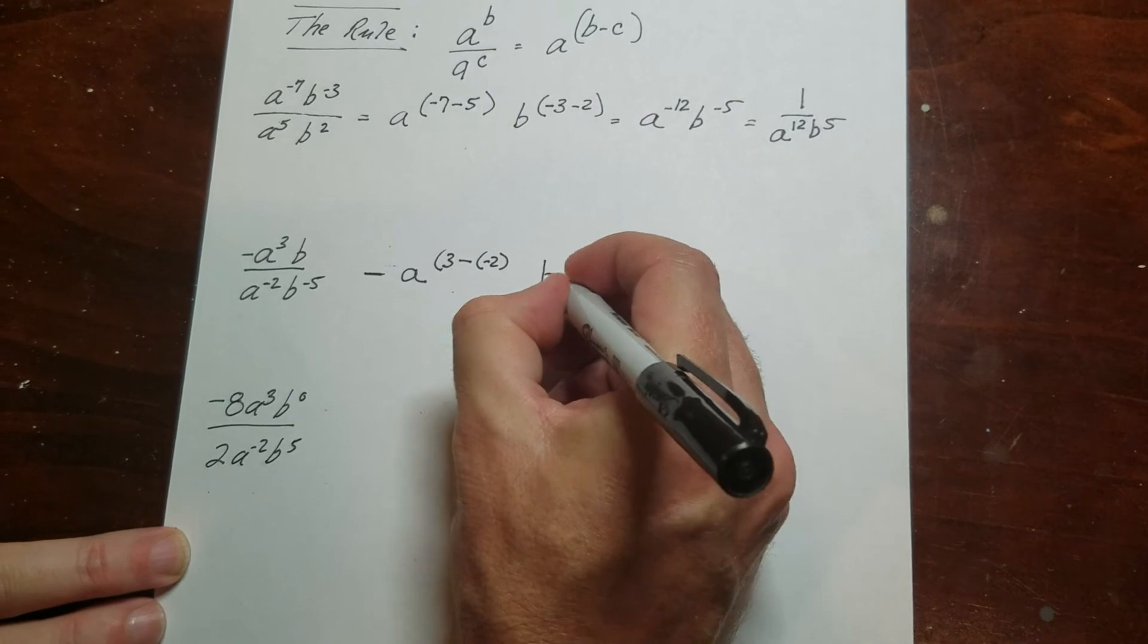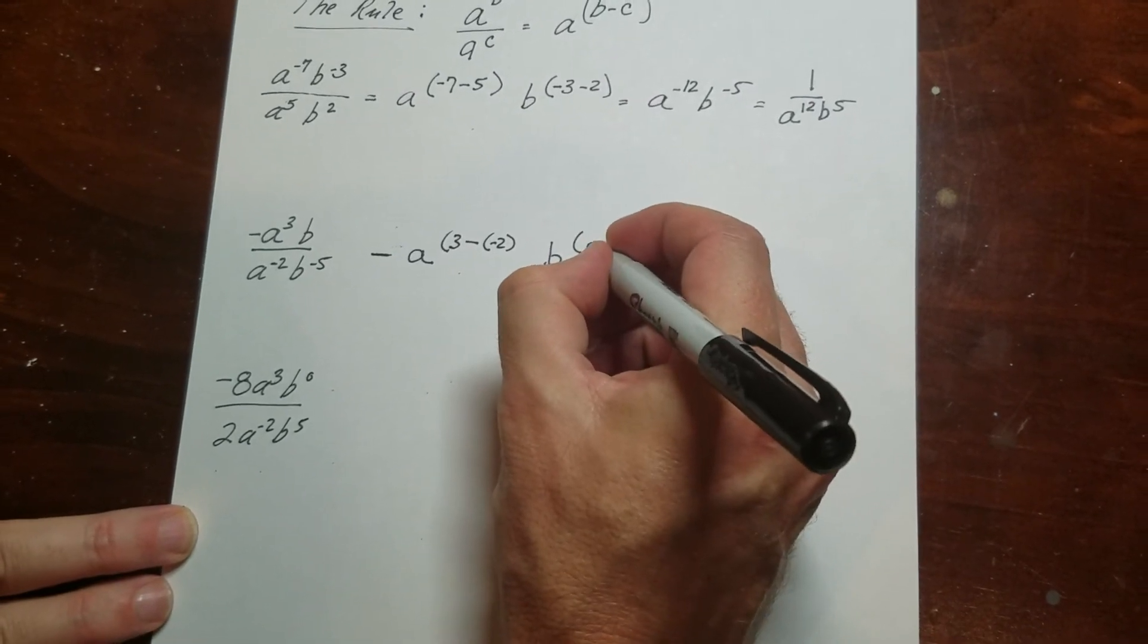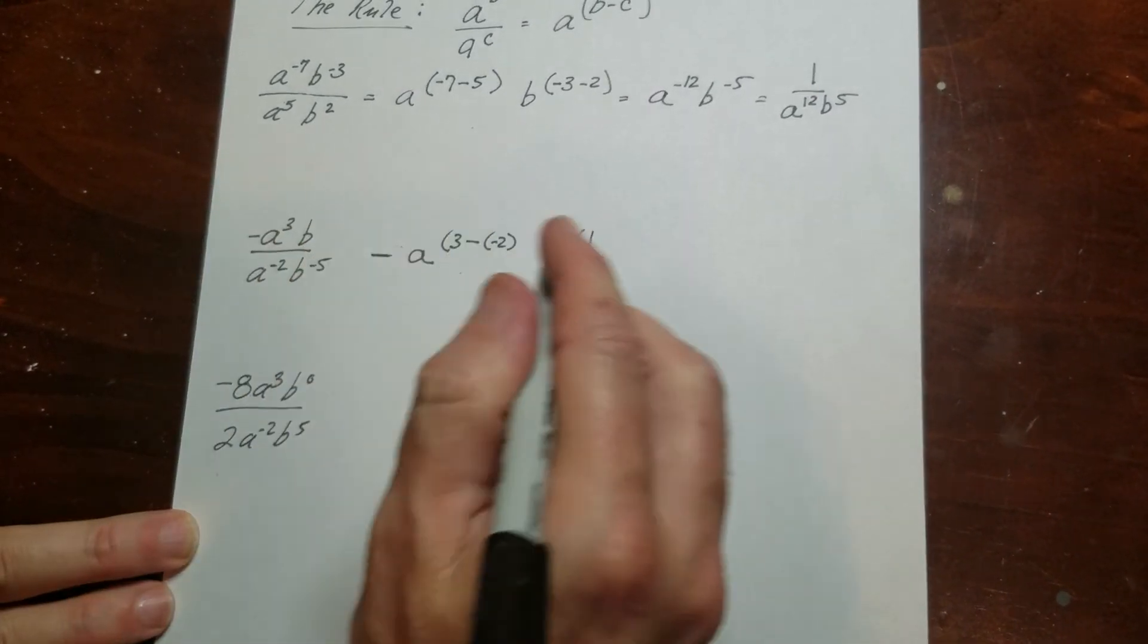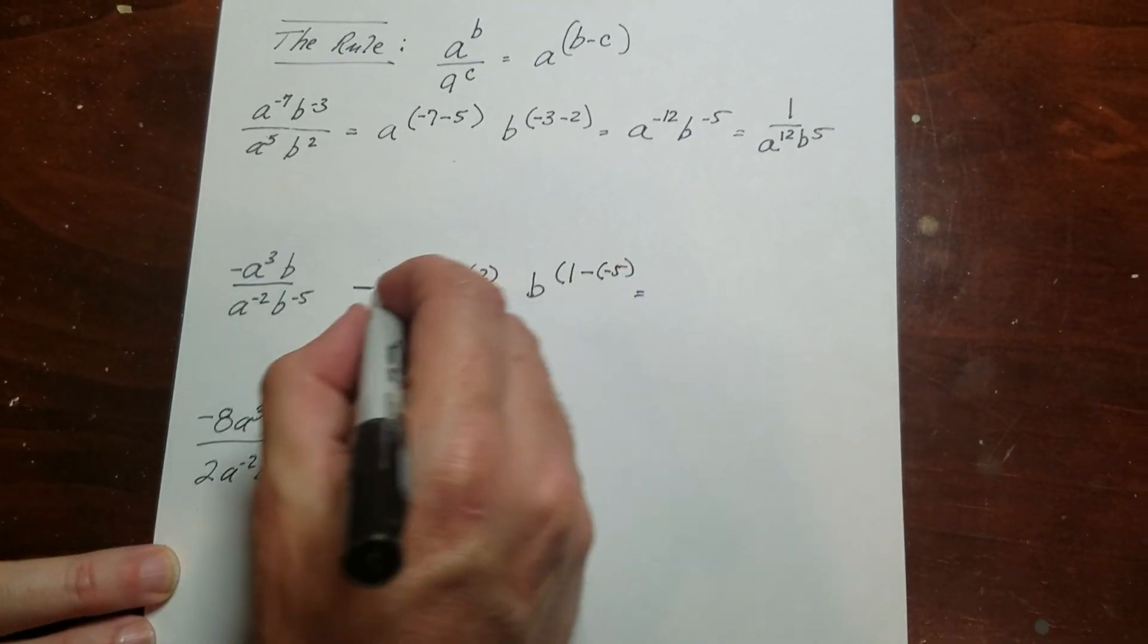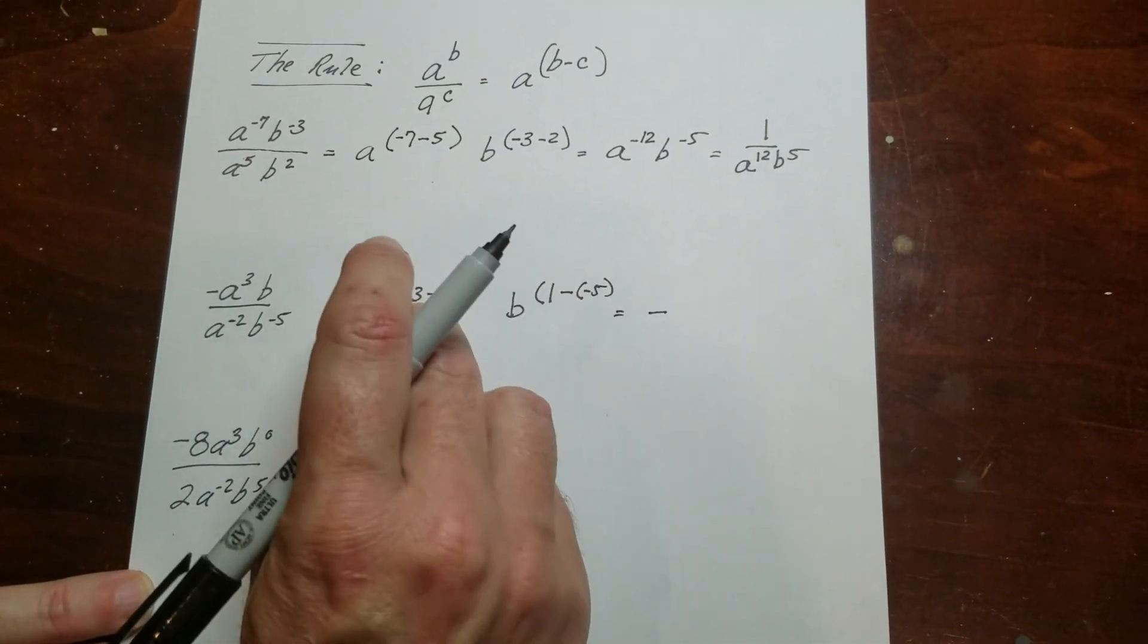And then I have a b, so it's going to be to the 1, because that's b to the 1, minus negative 5. So this is going to be a minus, and then this is 3. Negative negative 2 is plus 2, so that's a to the 5th.